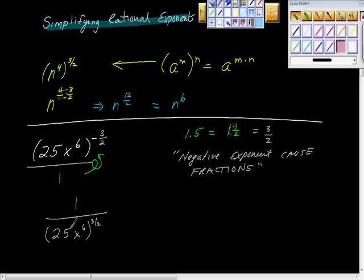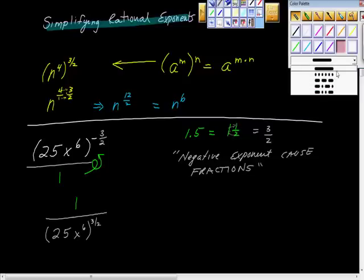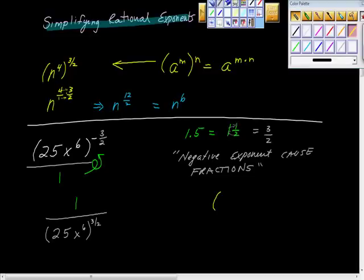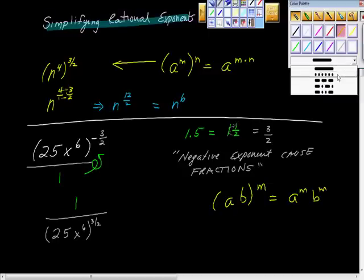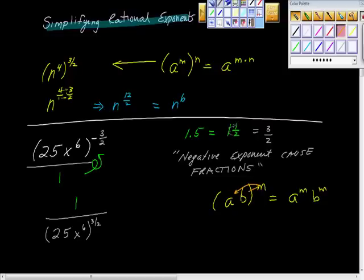This solidus right here, the fraction bar, is this one right here. And we're going to have now 25x to the sixth all raised to the positive 3 halves power. What happened to the negative exponent? It was cured because we know that negative exponents cause fractions. And now I'm going to distribute this, right? And this is where I see a lot of mistakes being made. I'm really concerned about it. Remember, here's the rule. Remember the rule. This is the rule that ab to the power of m is equal to a to the m times b to the m. That is to say, say it with me, exponents are distributive over multiplication.